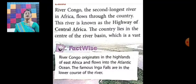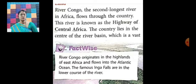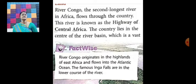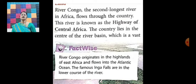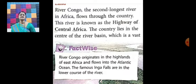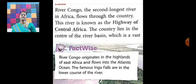Now let us talk about the land of DRC. The river Congo is the second longest river in Africa. It flows through the country and is known as the highway of central Africa. The country lies in the center of the river basin, which is a vast low-lying area.